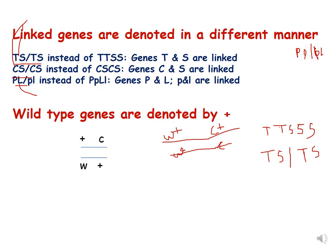Linked genes are denoted differently from genes following Mendelian inheritance. A slash is placed between linked genes — for example, T/S instead of TTSS, indicating that T and S are linked. Wild-type genes are denoted by a plus sign, so plus/C means plus is wild type while C is a dominant mutation, and W is a dominant mutation while plus is wild type.